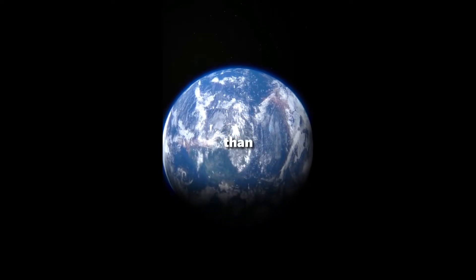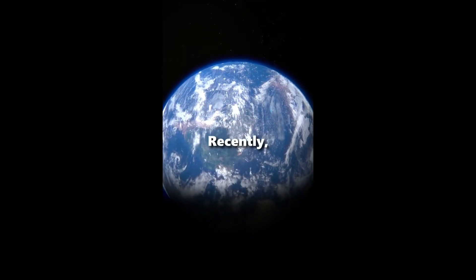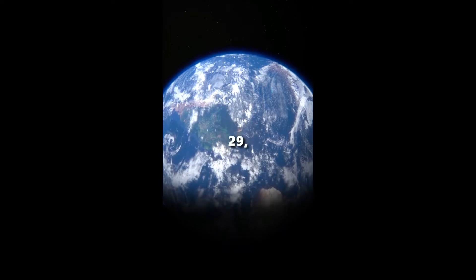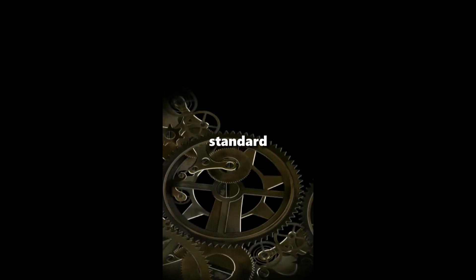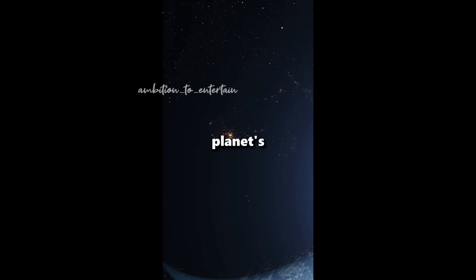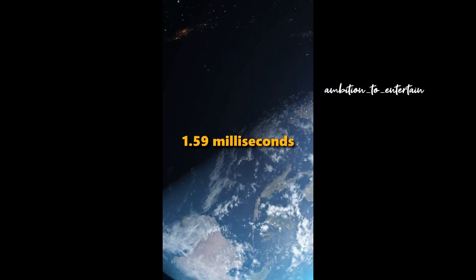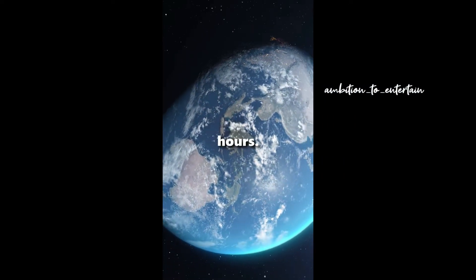The Earth is rotating faster than its usual speed. Recently, on July 29th, the Earth broke its record for the shortest day as it completed a full spin in less than its standard 24-hour rotation. Scientists recorded the planet's full spin was 1.59 milliseconds shorter than 24 hours.